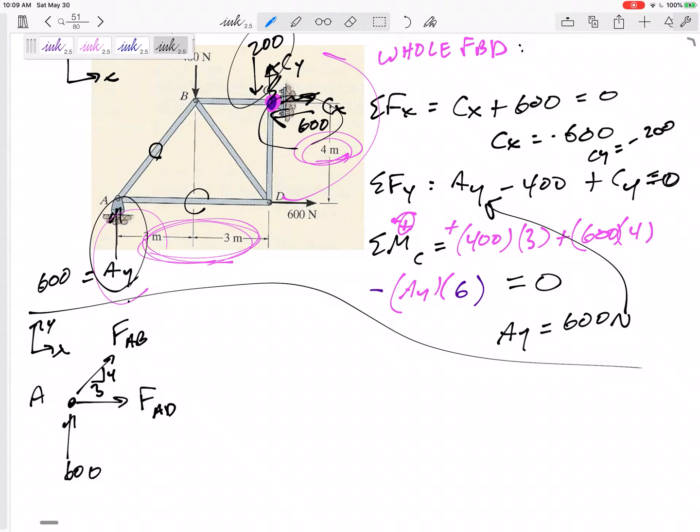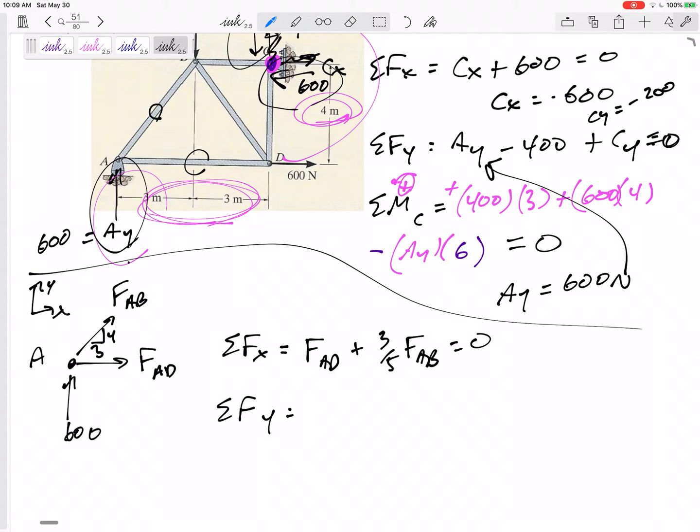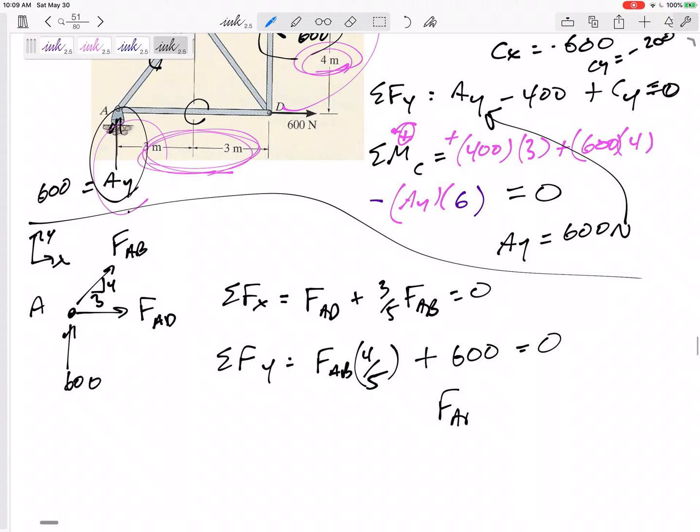Now, let me sum the forces in X and sum the forces in Y. Summing the forces in X: FAD and the 3/5 component of FAB equals 0. Can't solve, so let me jump to my next equation. Summing the forces in Y: positive the 4/5 component of FAB, positive 600 equals 0. From this equation, I would get FAB is negative 750.